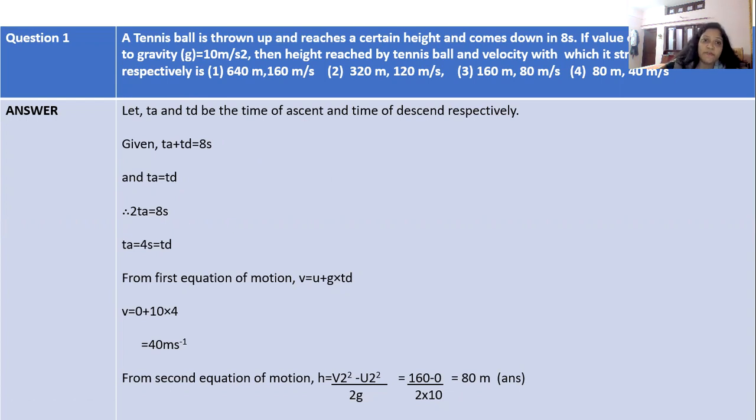Let TA and TD be the time of ascent and time of descent respectively. It's given TA + TD = 8s. We can say TA = TD, so 2TA = 8s. TA and TD finally will be 4 seconds.